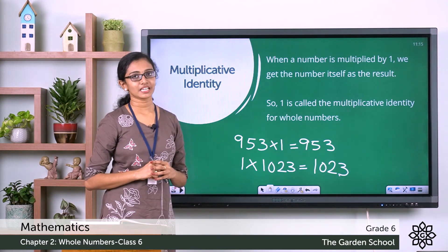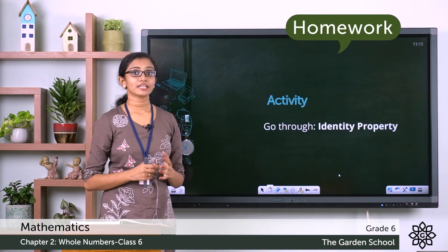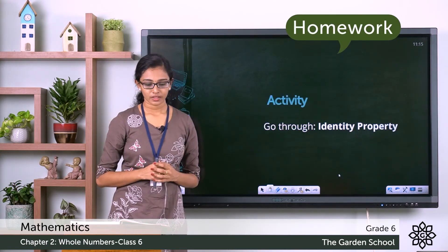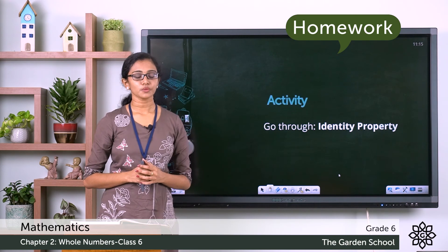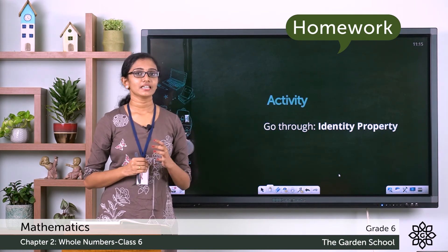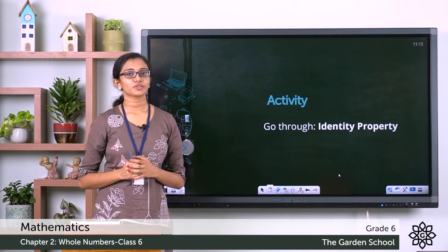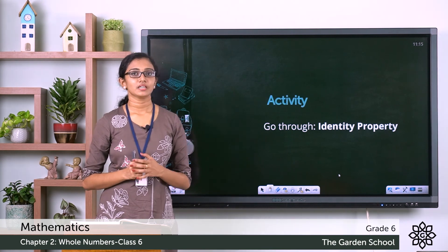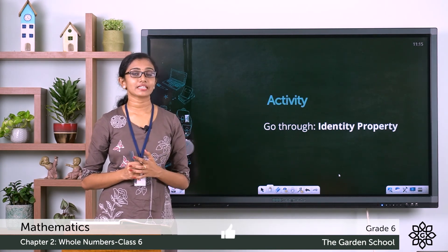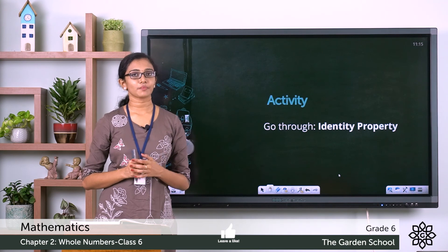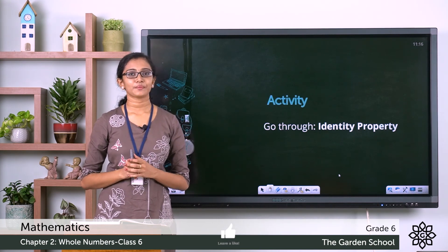I hope this property is clear to you now. You can go through this property once again — it is given on page number 22 of your textbook. That's all for today, children. Just think about how we can apply the identity property in the case of division. We'll discuss it in the next class. Till then, bye!